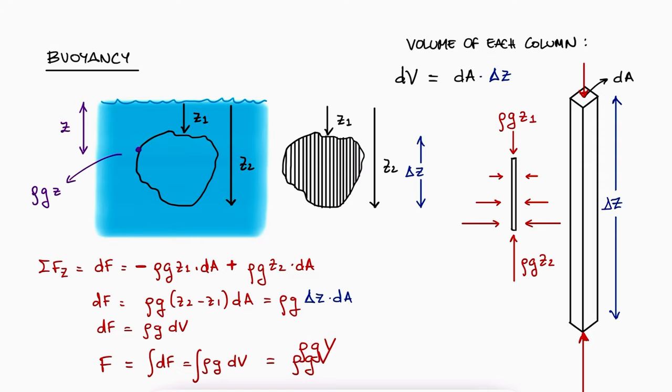We usually use either F sub B or just capital B to refer to the buoyancy force. And of course, this buoyancy force is always going up. The pressure at the bottom surface is always higher than on the top surface, creating a net force going upward. And also, note that the density rho is that of the fluid and has nothing to do with the density of the floating or submerged objects.